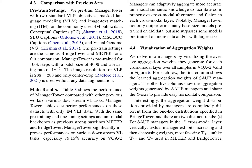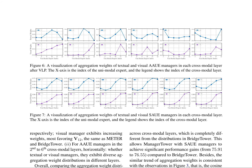In contrast, SAUE managers exhibit a similar progressive trend across cross-modal layers, with textual managers favoring T10 and visual managers favoring V12. This provides strong evidence that the introduced managers can adaptively aggregate unimodal semantic knowledge for comprehensive cross-modal representation learning. Comparing BridgeTower and Manager Tower with SAUE managers, the latter achieves significant performance gains due to its ability to adapt and generate different aggregation weights. The analysis also reveals that AAUE managers can help low-layer SAUE managers rectify their management of experts.